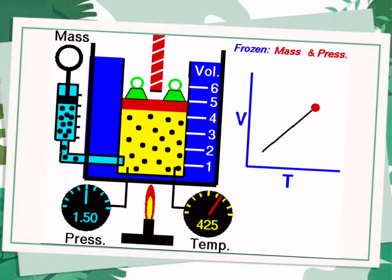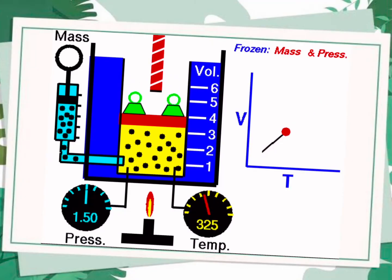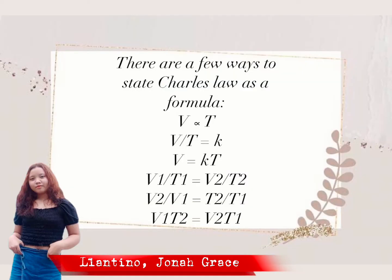Formula. There are a few ways to state Charles Law as a formula: V is proportional to T; V over T equals K; V equals KT; V1 over T1 equals V2 over T2; V2 over V1 equals T2 over T1; V1 T2 equals V2 T1.